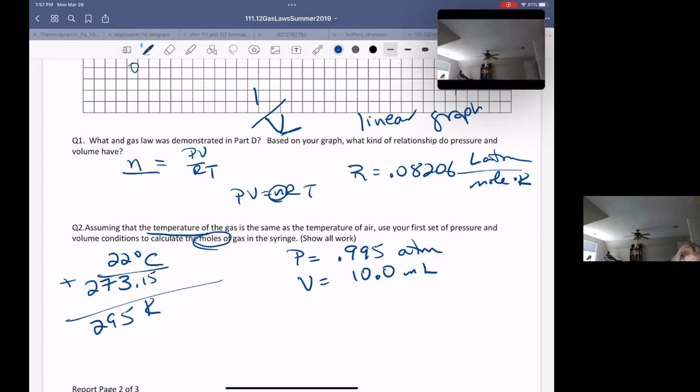If I have 10 milliliters, remember that there's one liter for every 1,000 mils, and that's going to give us 0.010 liters. And if I plug this in and measure the moles of the gas, this is just in my sample, that's going to be P, 0.995 atm, times the volume, 0.0100 liters, divided by R, 0.08206 liters atmospheres per mole Kelvin.